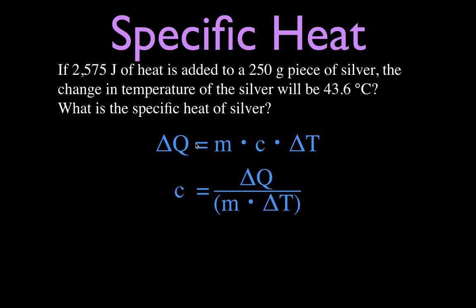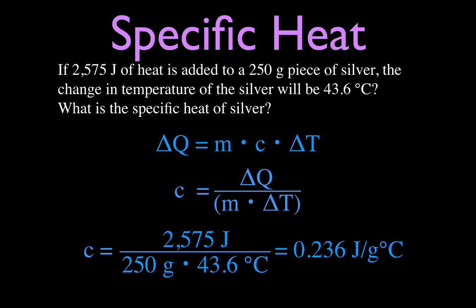And we get that the specific heat will therefore be equal to 2575 divided by 250 times 43.6. Make sure you do these two first before you divide into the 2575. And you'll get that the specific heat of silver is 0.236. And if you look that up, joules per gram per degree Celsius, that's what it says in the book.